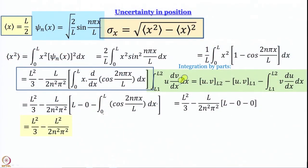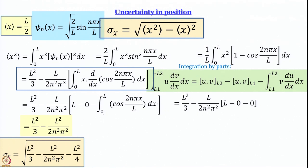This is where we stopped in the last module. We have worked out an expression for uncertainty in position, which turns out to be L squared by 3 minus L squared by 2N squared pi squared. To be honest, we have not worked out the uncertainty in position yet — what we have worked out is the average value of x squared, the first term under the square root sign. The saving grace is that we already know the average value of x, which is L by 2. Now let us work out the expression under the square root sign: average value of x squared minus the square of the average value of x.